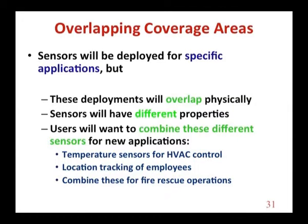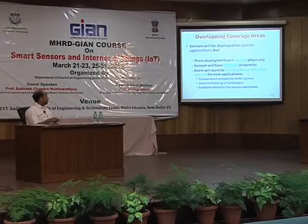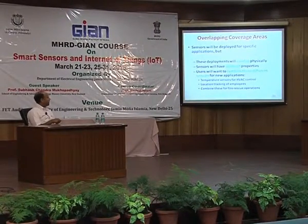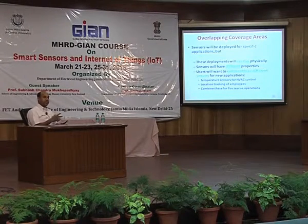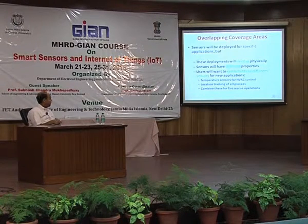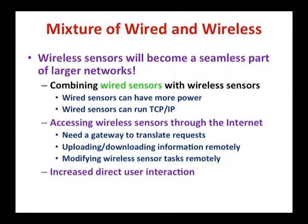Right now sensors are deployed for specific applications, but in the future they will overlap physically and sensors may have different properties. We may combine different types of sensors for new applications — for example, temperature sensors for HVAC control, employee tracking, or fire risk operation. Not all will be wireless sensors — in some applications, wired sensors may give better results. Performance-wise, wired sensors are much better. It can be a combination of both. Wired sensors do not have the power problem since they draw from the electric supply, so they can have more processing ability and memory.